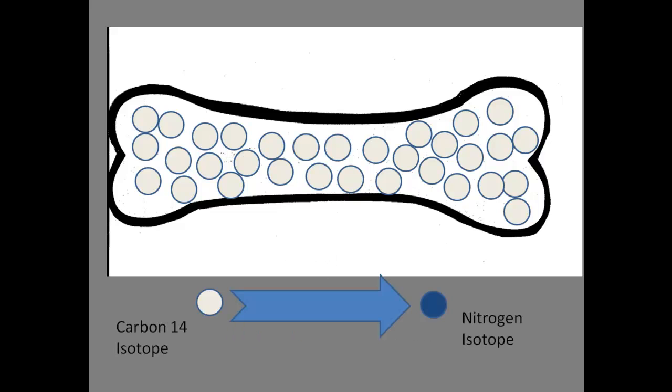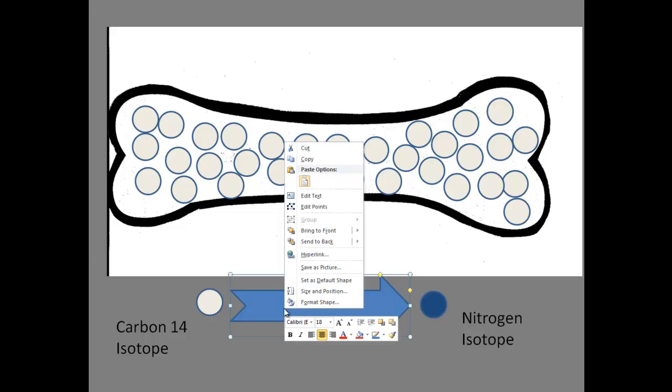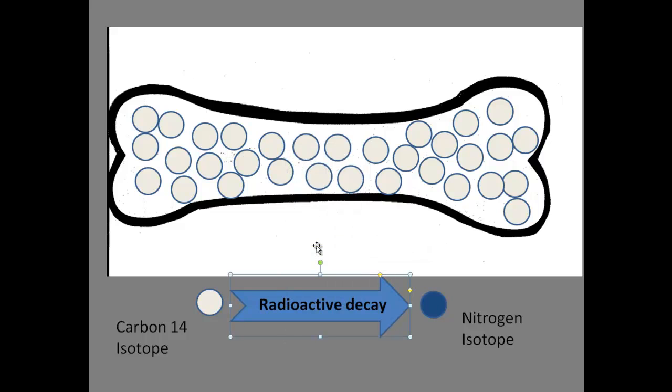And carbon-14 wants to do something called decay, radioactively decay. And so carbon-14 is going to gradually change into something called a nitrogen isotope. It actually changes into a completely different element. And so scientists will take a look at a fossil and look at the percentage of carbon-14 and the percentage of nitrogen and see how much has remained and how much has changed.